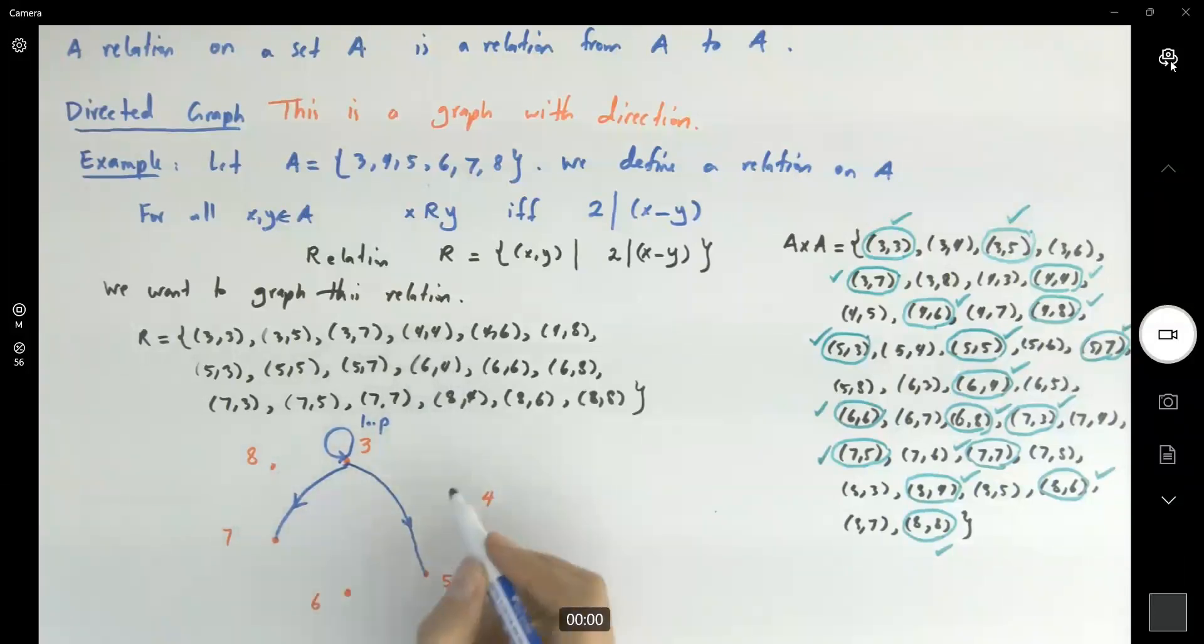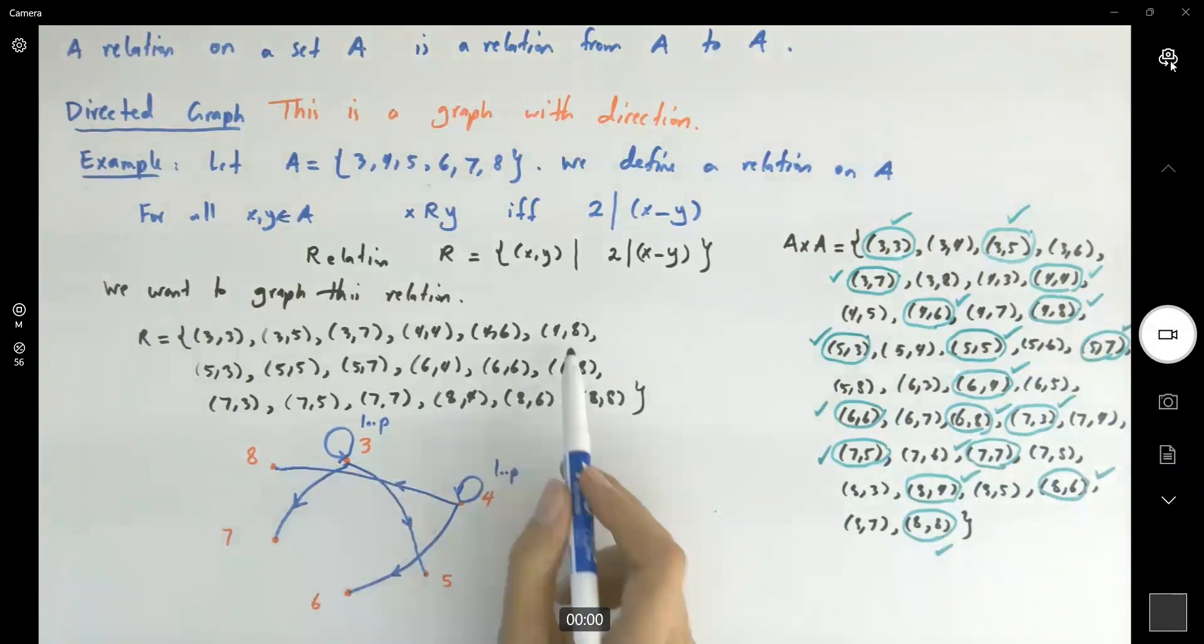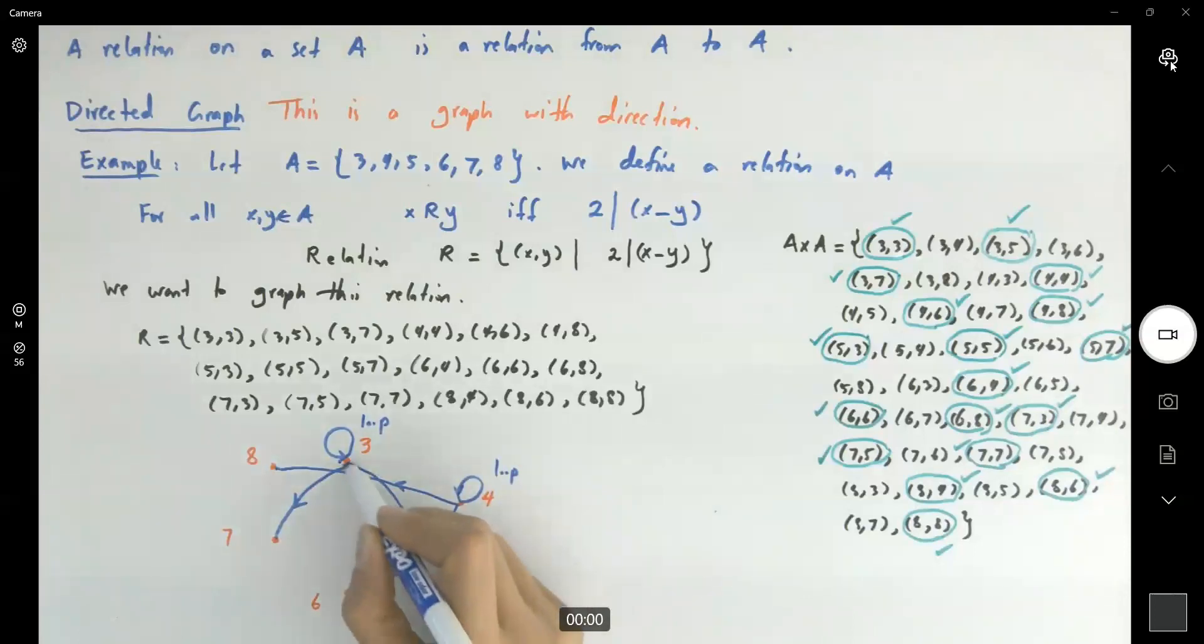4 and 4, so you're going to use a loop for 4. 4 and 6, from 4 going to 6. 4 to 8. Then you have 5 and 3, from 5 to 3, so you have an arrow from 3 to 5, now from 5 to 3 with the opposite direction. 5 and 5, we're going to have a loop on 5. 5 and 7, from 5 going to 7.